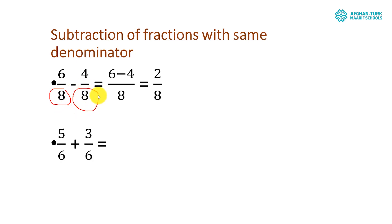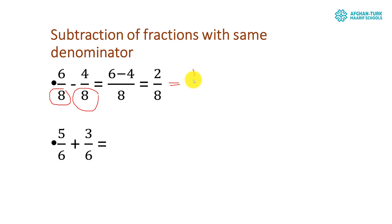For like fractions in subtraction, we take one denominator and subtract the numerators from each other. So 6 minus 4 is equal to 2 over 8. If we write the simplest form of this fraction, it is 1 over 4, since 2 and 8 are both in the 2 times table.